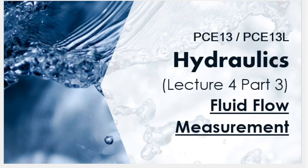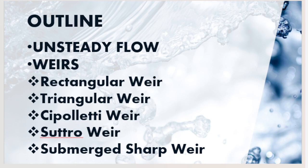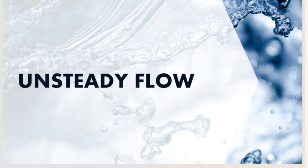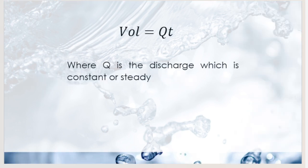Good day, class. We're going to continue our discussion — this will be the last part of the topic on fluid flow measurement. Today we're going to continue our discussion on unsteady flow and weirs. Under this topic, we have five subtopics: rectangular, triangular, Cipolletti, the Sutro or proportional weir, and the submerged sharp-crested weir.